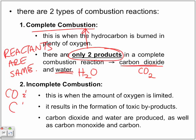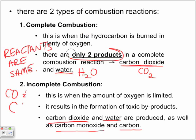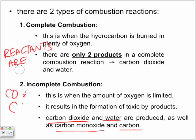So carbon dioxide and water are produced always in any combustion reaction. And in incomplete combustion, we also get carbon monoxide and carbon as additional toxic byproducts. Those are the differences between a complete combustion reaction and an incomplete combustion reaction.